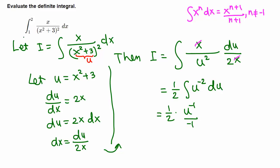This is one-half times u to the negative 2 plus 1, which is negative 1, divided by negative 1. Let's simplify: negative 1 pulled all the way to the front gives negative one-half. U raised to negative 1 is the same as 1 over u, so this is negative 1 over 2u. We need to back-substitute u equals x squared plus 3.